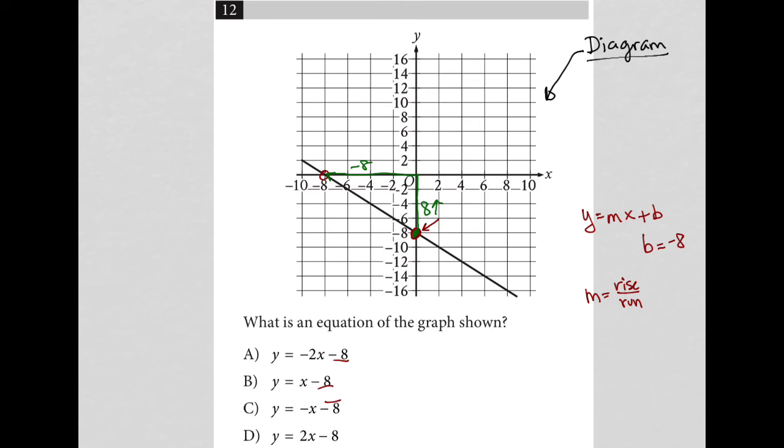So my rise is positive 8. My run is negative 8. And therefore, my slope is negative 1 because 8 divided by negative 8 is negative 1. So my equation should be y equals negative x, negative 1x. No need to write the 1. So negative x minus 8. And that is answer choice C.